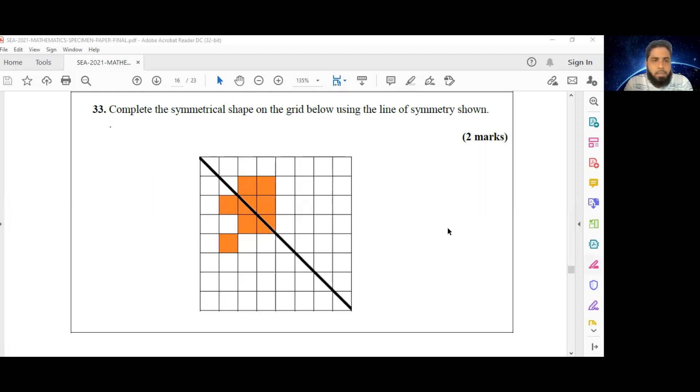Number 33 reads: complete the symmetrical shape on the grid below using the line of symmetry shown. What we have here is a symmetrical shape, and that dark diagonal line across the grid is the line of symmetry, or the line about which if we were to fold this symmetrical shape, either side would match perfectly with the other.